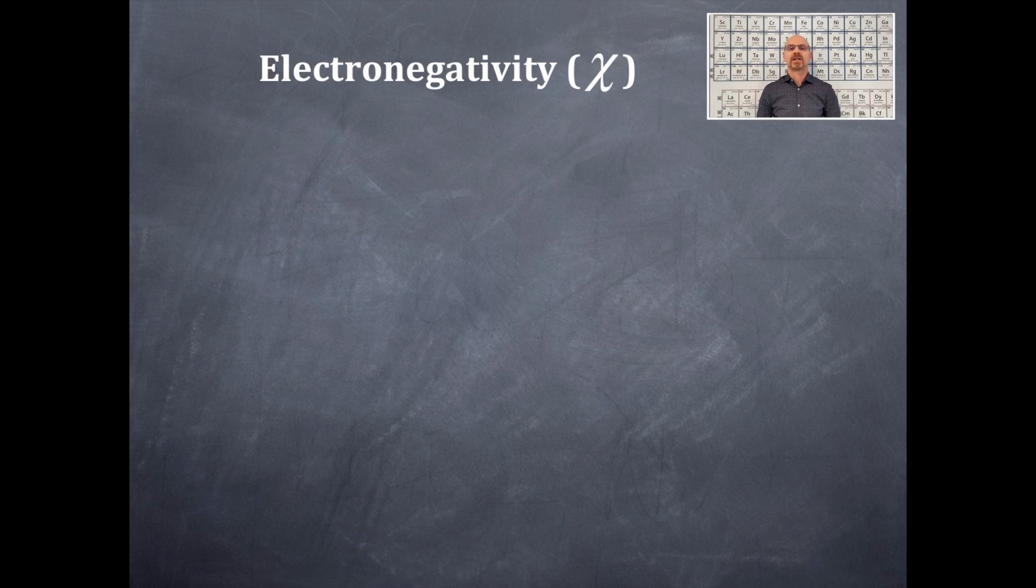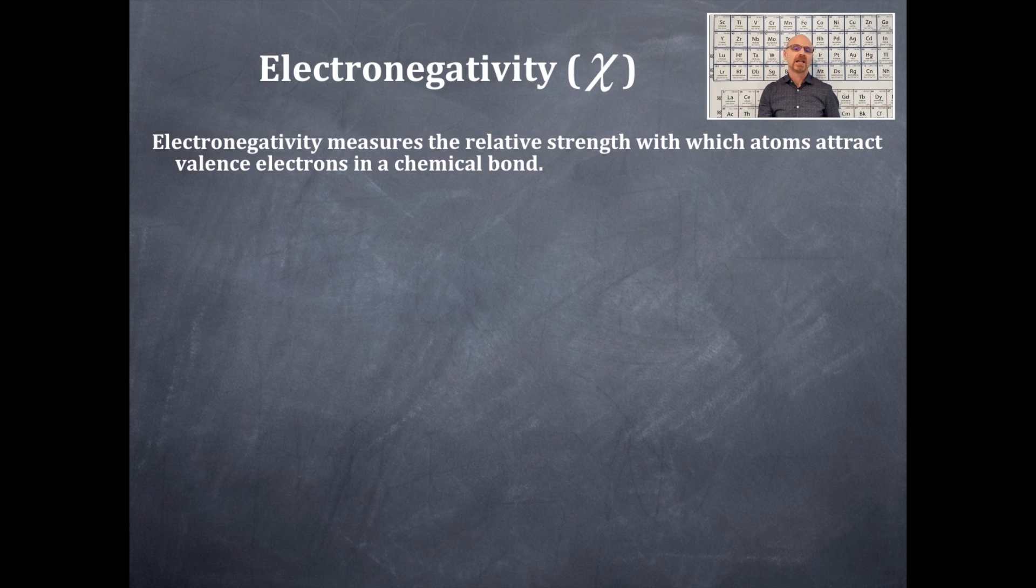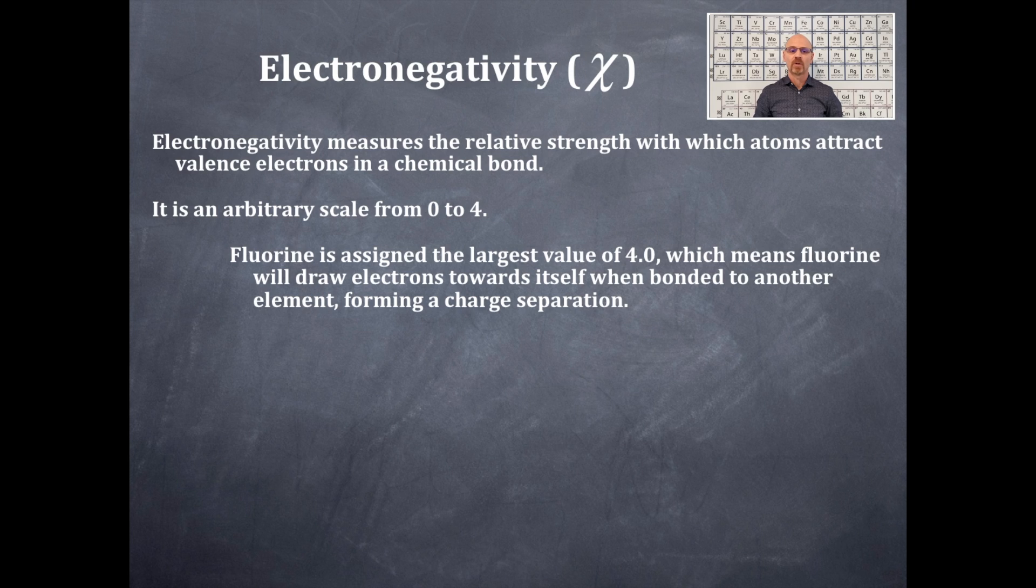Today we're talking about electronegativity and the symbol for electronegativity is that scripted X right there. Electronegativity measures the relative strength with which atoms attract valence electrons in a chemical bond. It's an arbitrary scale from 0 to 4.